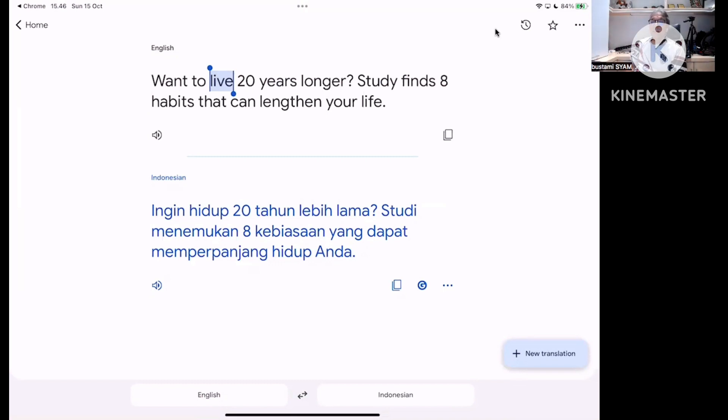Now we're looking at the sentence structure. Actually, if 'wanna live 20 years longer', it's not a complete correct sentence, but because this is a title, there's no problem. It should be 'do you wanna live 20 years longer', but again, because this is a title, it's acceptable to write 'I wanna live 20 years longer', because a title must attract the reader's attention to click.